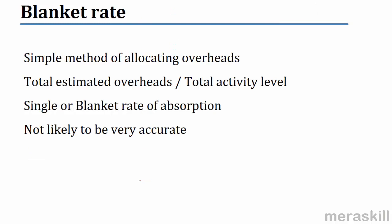What is a blanket rate? A blanket rate is also known as a single rate, so don't get confused — if you are asked about a single rate, it's the same as a blanket rate of absorption. You take the total overheads of the entire organization, all the manufacturing overheads, divided by the activity level to arrive at one rate. It does not matter how many machines or departments you are operating. It's called a single or blanket rate — one rate of absorption — and it is very easy, simple, and convenient to calculate.